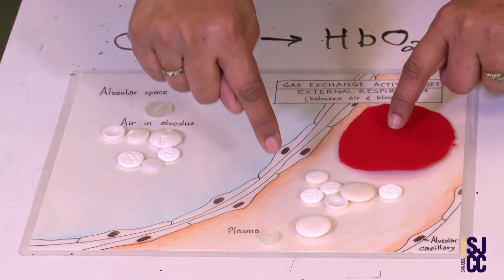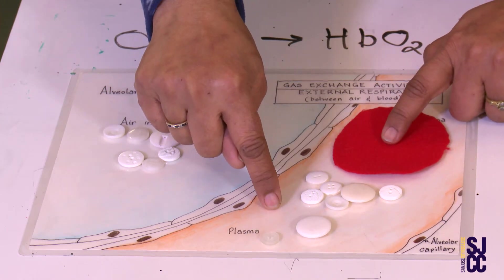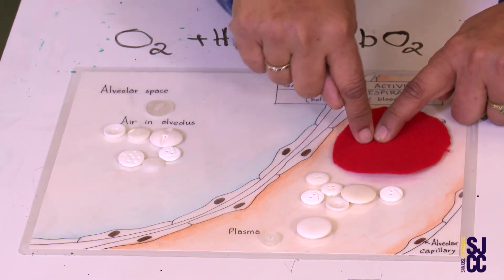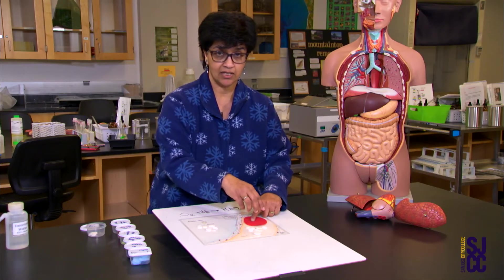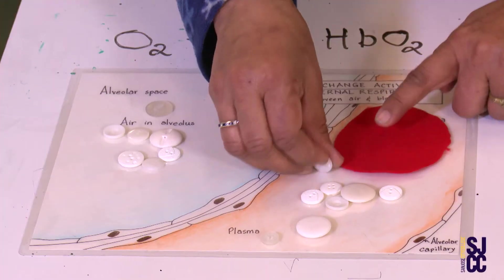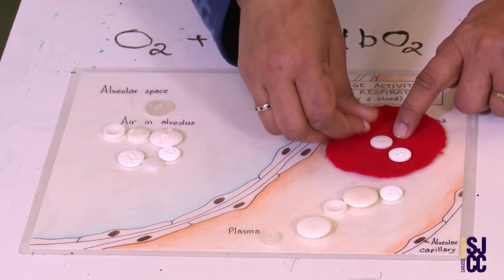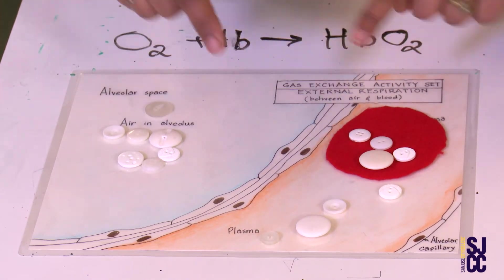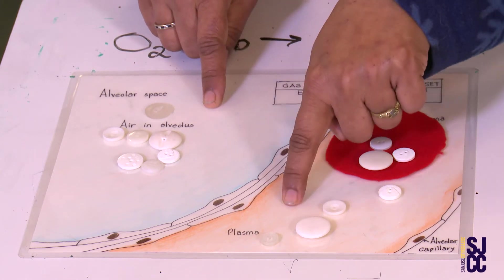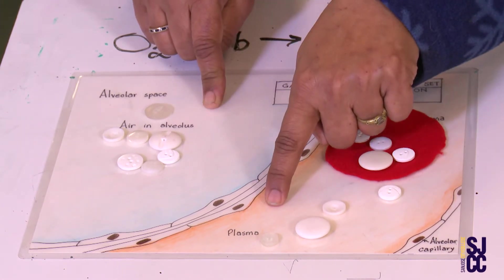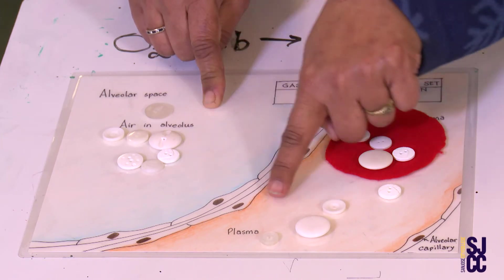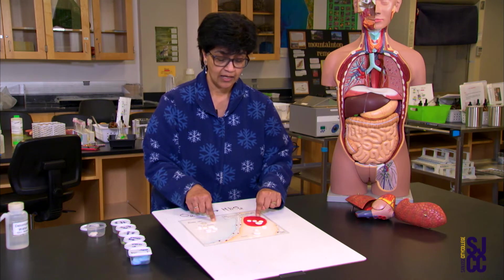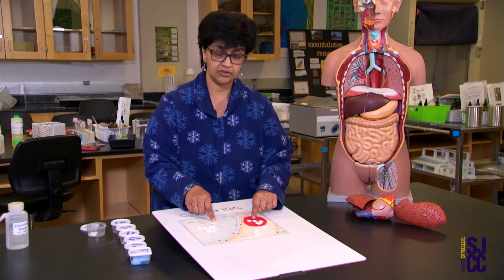Oxygen is at high concentration in the plasma and low concentration in the red blood cell, so it's going to keep going down the concentration gradient into the red blood cell until there is equilibrium. As oxygen moves into the RBC, the plasma concentration drops, which re-establishes a concentration gradient between the alveolus and the plasma, so more oxygen keeps coming in.